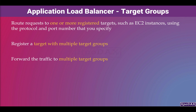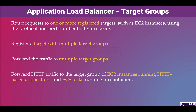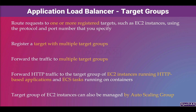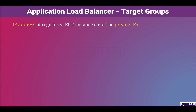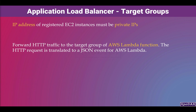Application Load Balancer can forward HTTP traffic to the target group of EC2 instances running HTTP-based applications, and ECS tasks running on containers. The target group of EC2 instances can also be managed by an Auto Scaling Group. The IP address of registered EC2 instances must be private IPs. ALB can also forward HTTP traffic to the target group of AWS Lambda functions, where the HTTP request is translated to a JSON event.